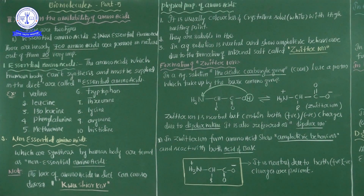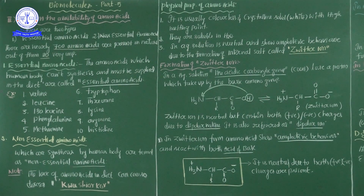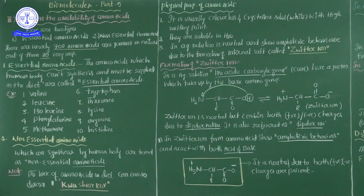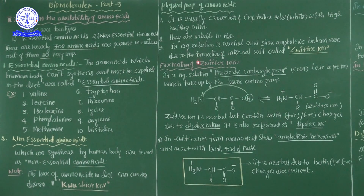Amino acids are generally neutral in aqueous solution and show amphoteric behavior. Amphoteric behavior means the amino acid can behave as both an acid and a base. A normal amino acid is neutral because it has both a positive charge and a negative charge. In aqueous solution, it is neutral and shows amphoteric behavior.